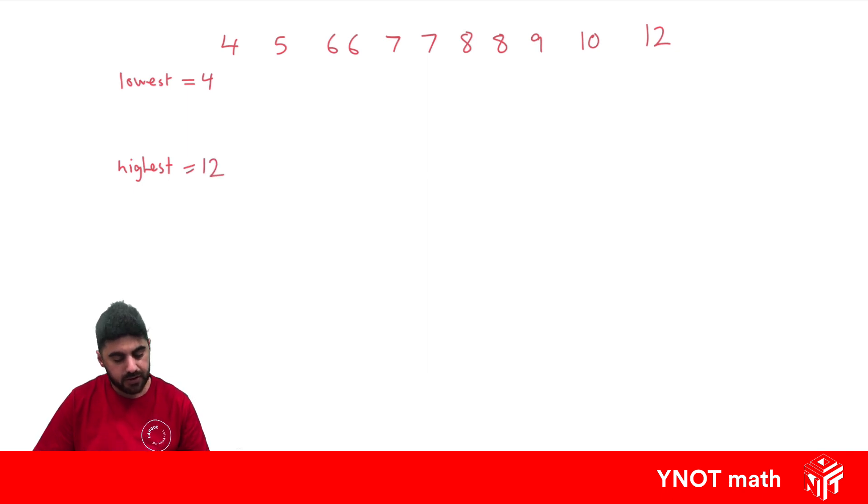We also need the median, which is the middle value. It's also called Q2. So let's have a look. So we've got 1, 2, 3, 4, 5, 6, 7, 8, 9, 10, 11 scores.